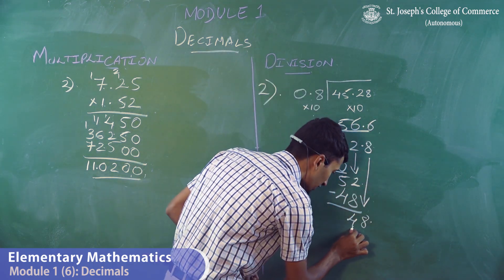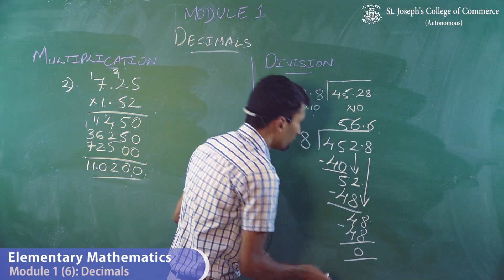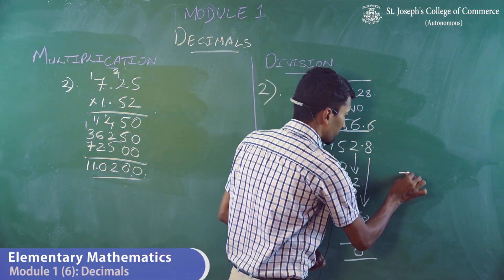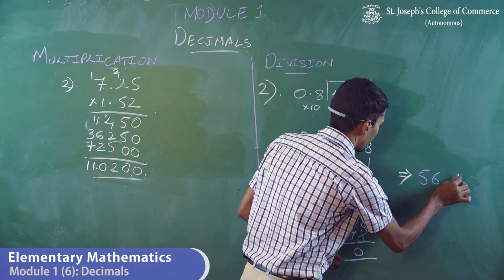8, 6s are 48, and you have no remainder. So, this is your answer, 56.6.